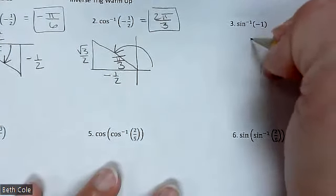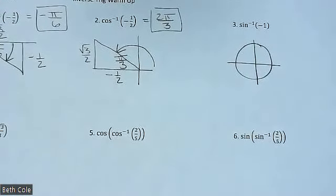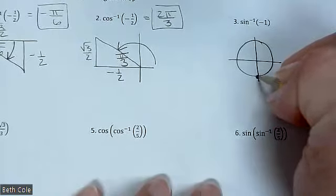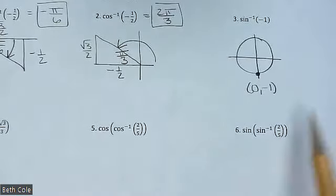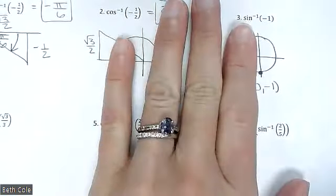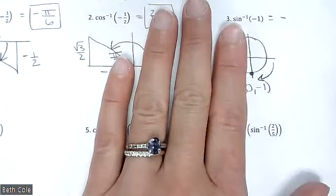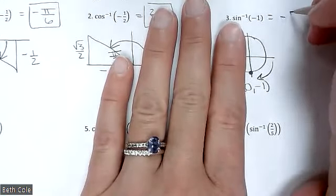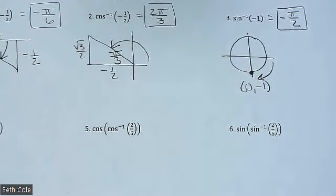Instead of a triangle, what are we going to get for this one? A circle, because it's negative one. Sine is the y value, so you're looking for a place where the y value is negative one. Is it up, down, left, or right? Down, because that point is (0, -1). That's all the work needed for something like that. Your answer is the amount of rotation — you can't go over here, these two quadrants don't exist, you have to go backwards. So it's negative pi over two.